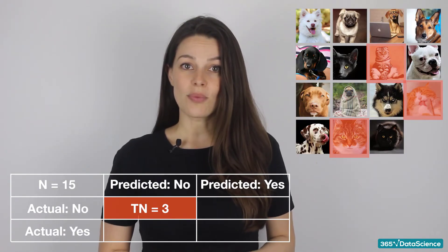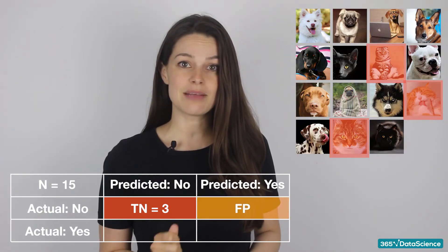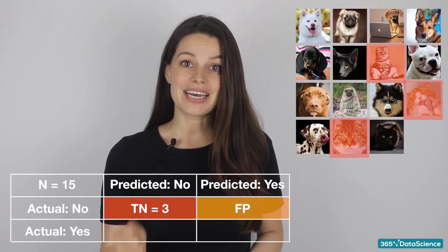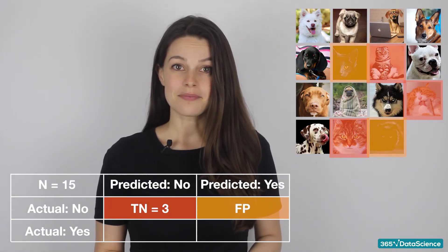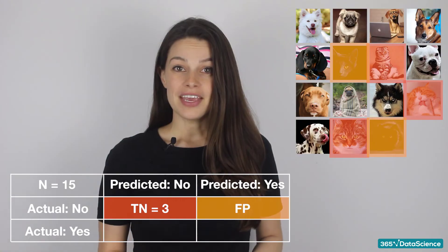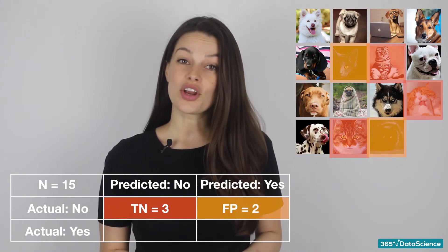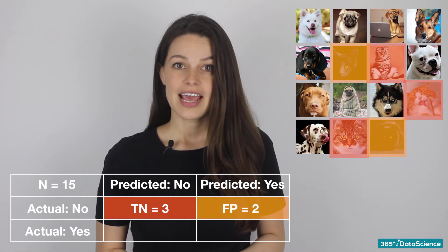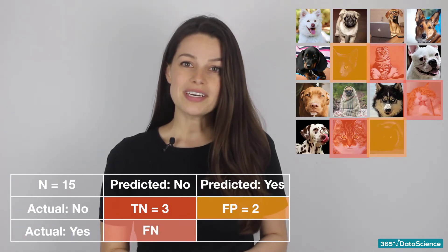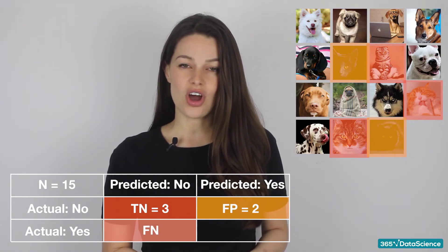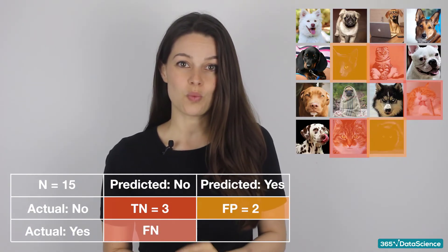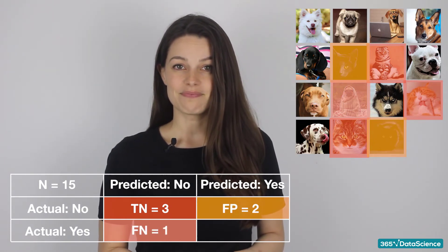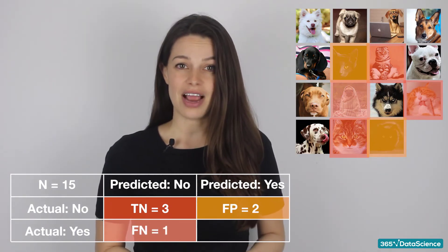Next, on the top right, you count how many times the model predicted that something was a dog, but in actuality it was not. Here you count two. These are your false positives — an incorrect prediction. Now for the bottom left, when did the model predict it was not a dog, but in fact was? Here you count one. This is your false negative — another incorrect prediction.